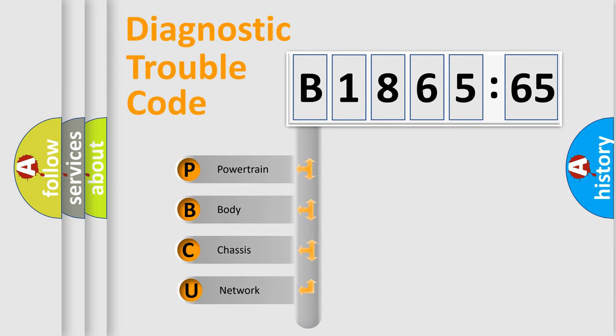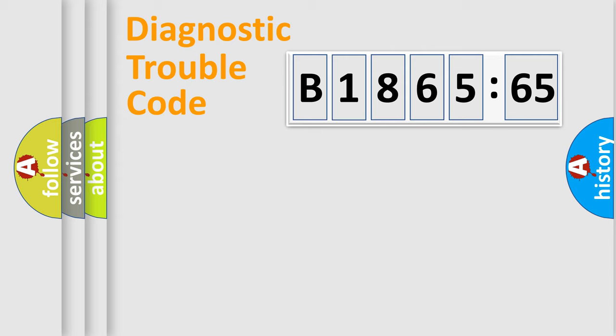First, let's look at the history of diagnostic fault code composition according to the OBD2 protocol, which is unified for all automakers since 2000. We divide the electric system of automobile into four basic units.